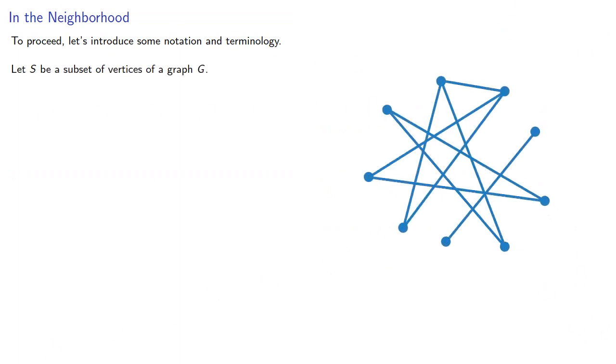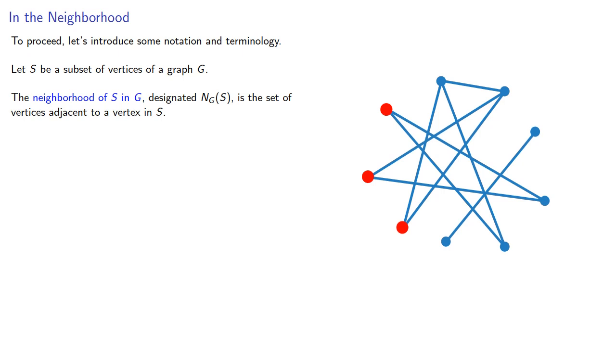To proceed, let's introduce some notation and terminology. Let S be a subset of vertices of some graph G. The neighborhood of S in G, designated this way, is the set of vertices adjacent to a vertex in S.